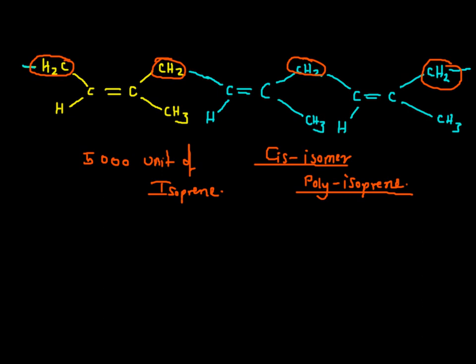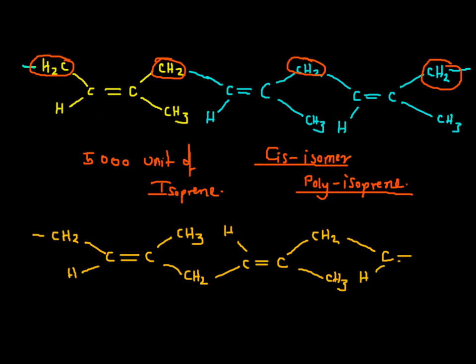Let's see the structure of trans isomer. In trans isomer we find these CH2 units are in opposite place. So this is CH2 C. This is CH2 C. So you can see the CH2 unit is in opposite direction. You can see this is the CH2 here, CH2 C.